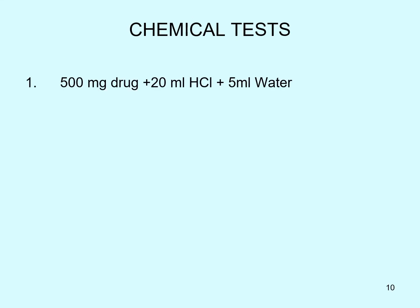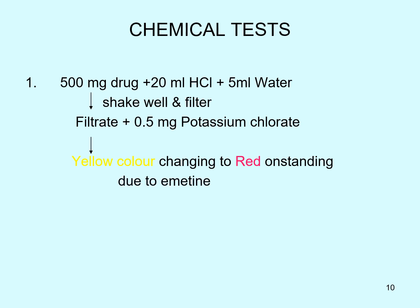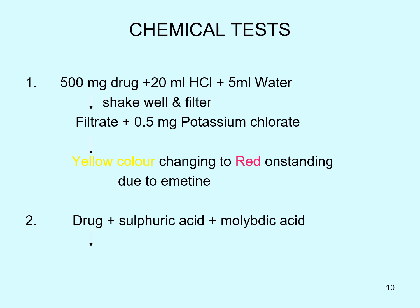In chemical tests, the famous test for Ipecac involves taking 500 mg of drug, treating it with 20 ml of hydrochloric acid and 5 ml of water, filtering the mixture, and adding 0.5 mg of potassium chlorate to the filtrate. A yellow color appears first, which then changes to red on standing, due to the presence of Emetine. The second test involves treating Ipecac with sulfuric acid and molybdic acid, producing a bright green color.